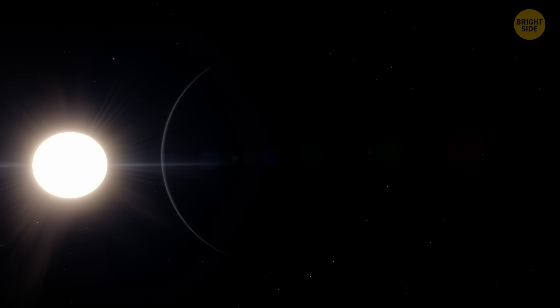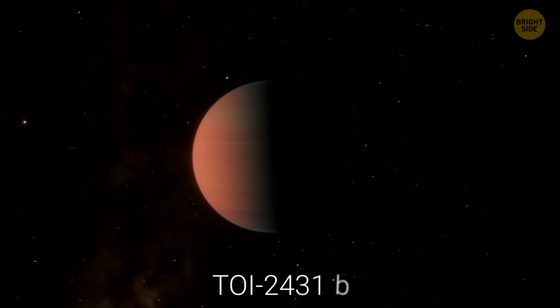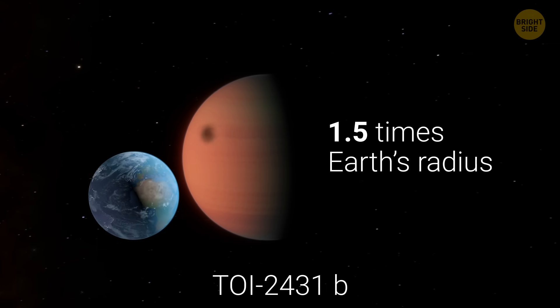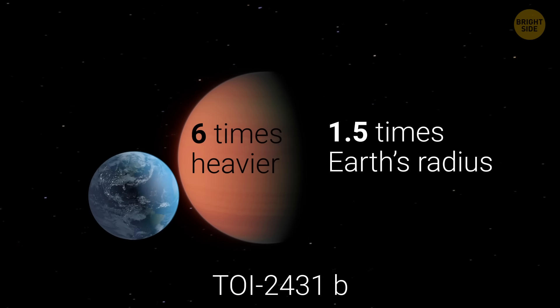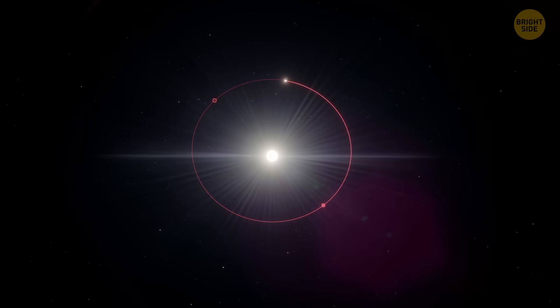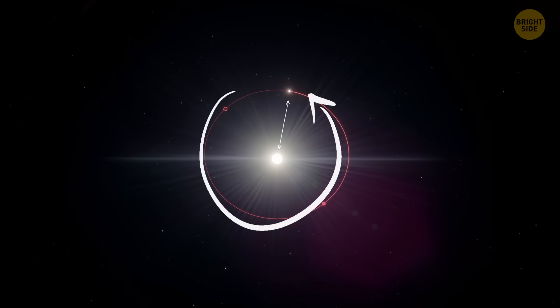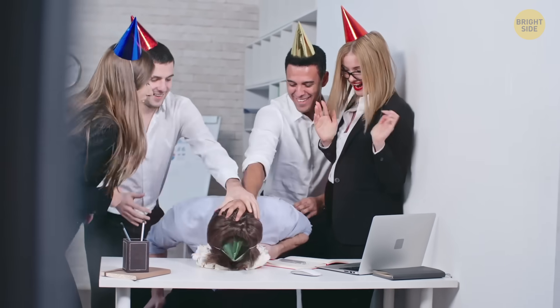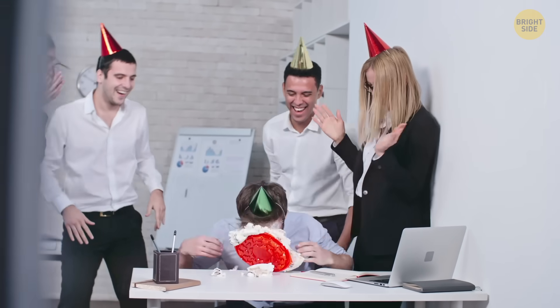Of course, not every planet out there is cozy or habitable. TOI 2431b is about 1.5 times Earth's radius, 6 times heavier, and has a crazy density. It hugs its star so tightly that it completes an orbit in just 5.4 hours. That's right, an entire year on this planet is shorter than your workday.